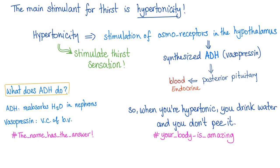What stimulates your thirst sensation? The main stimulant for thirst is hypertonicity — when plasma osmolality is greater than 295. It stimulates the osmoreceptors in your hypothalamus. Hypothalamic neurons synthesize ADH — antidiuretic hormone — and the ADH passes into the posterior pituitary, which did not synthesize it but will secrete the ADH into the blood.